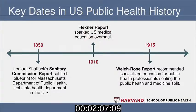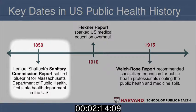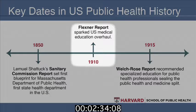There are key dates in the history of public health in the United States worth mentioning. In 1850, a Massachusetts citizen named Lemuel Shattuck created the Sanitary Commission Report, which established the blueprint for creating the Massachusetts Department of Public Health — the first state health department in the United States. In 1910, an important report called the Flexner Report was the first systematic look at medical education in the United States and found it severely wanting, resulting in the closing of most medical schools and the overhaul of medical education.